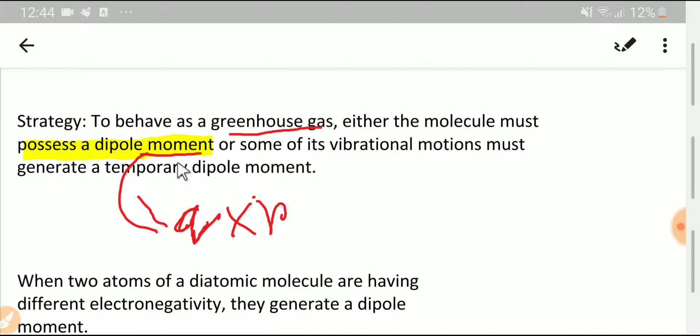Dipole moment is the product of charge and the distance between charge. If the bond length changes in a polar molecule, then the dipole moment will be changed and it will be IR active or a greenhouse gas.